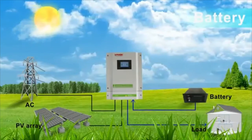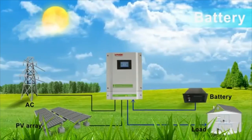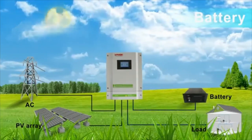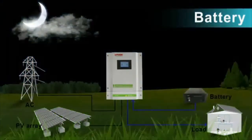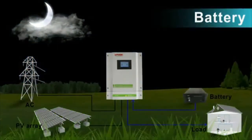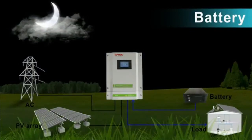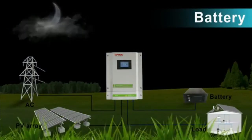Mode 3: The battery first supplies power to the load. Utility provides power when battery voltage drops to low-level warning voltage or the setting point in the program.